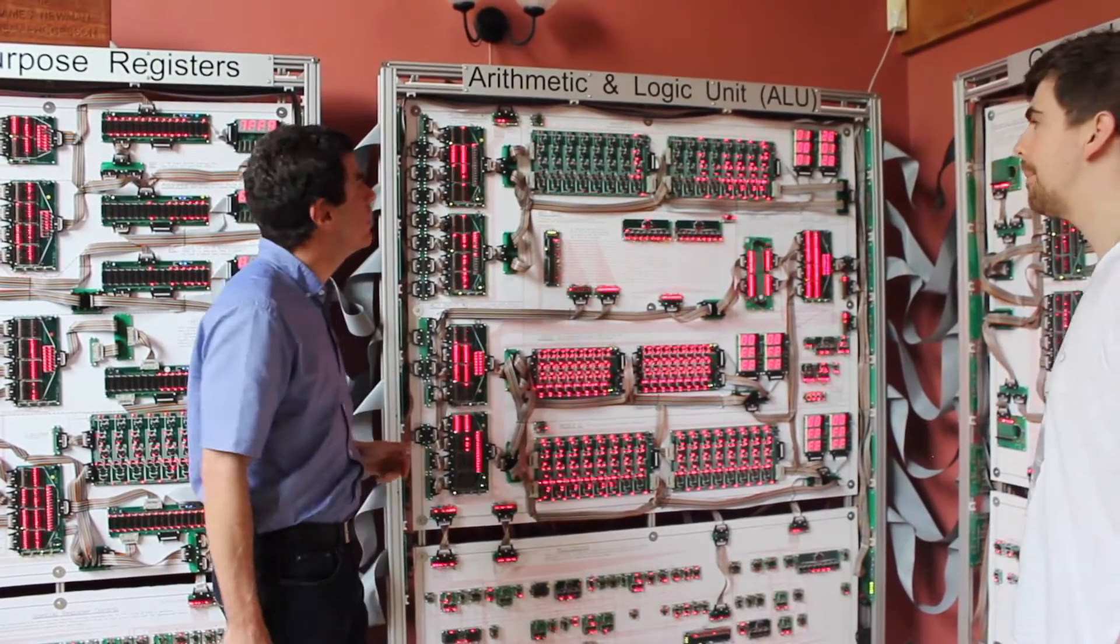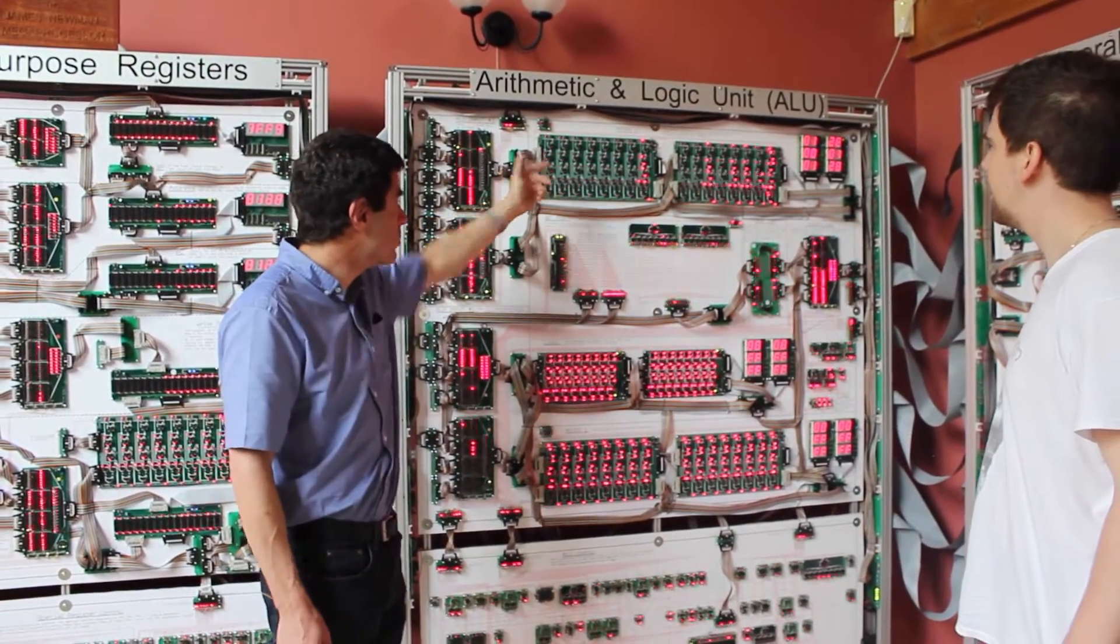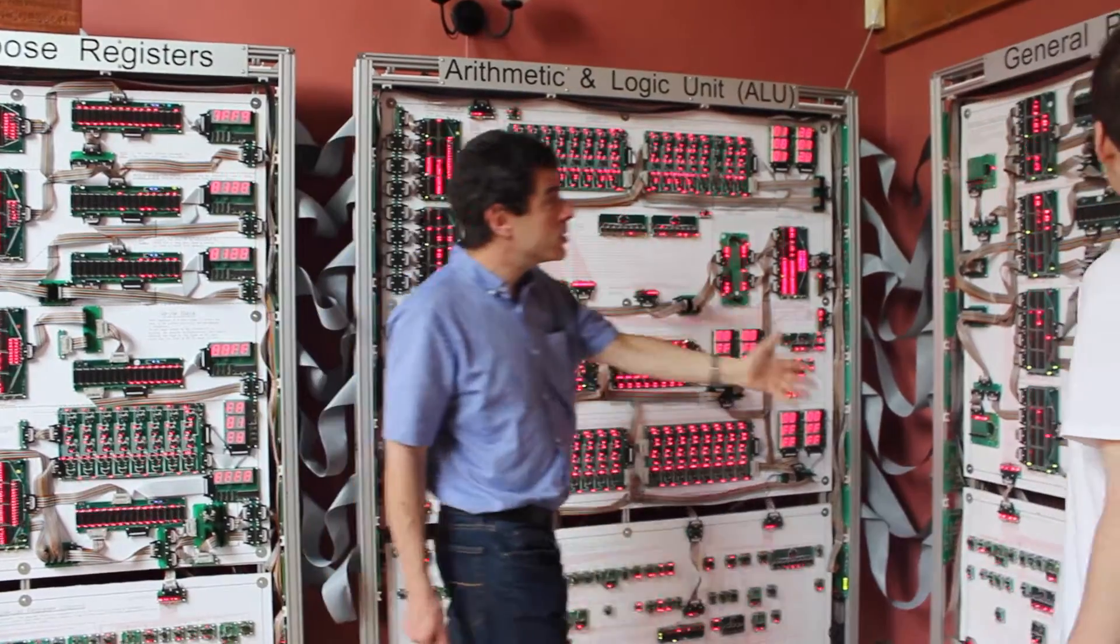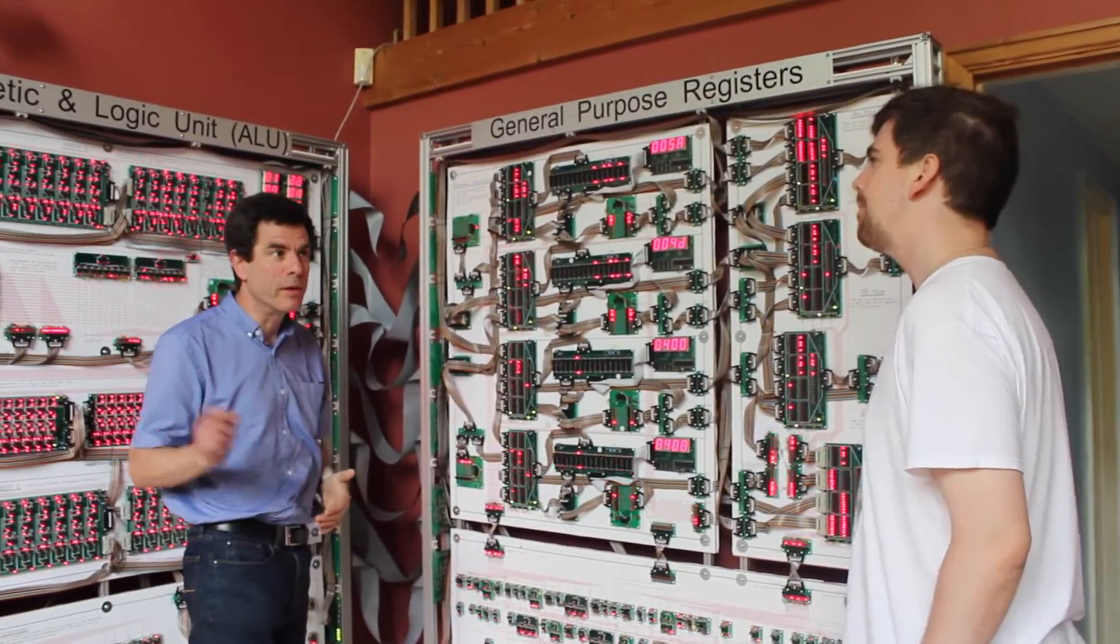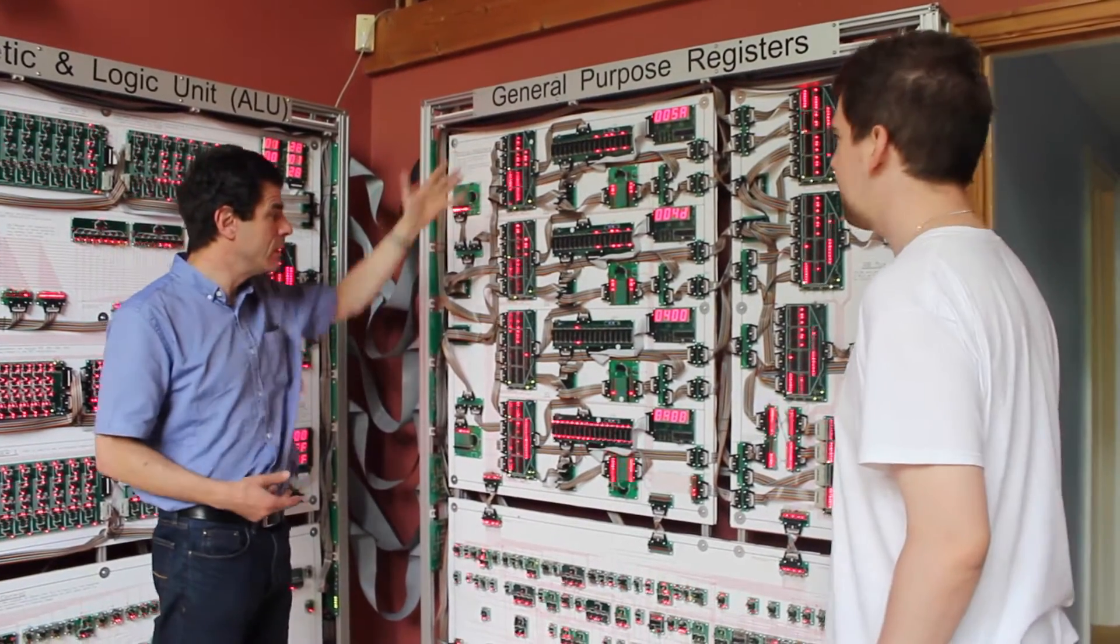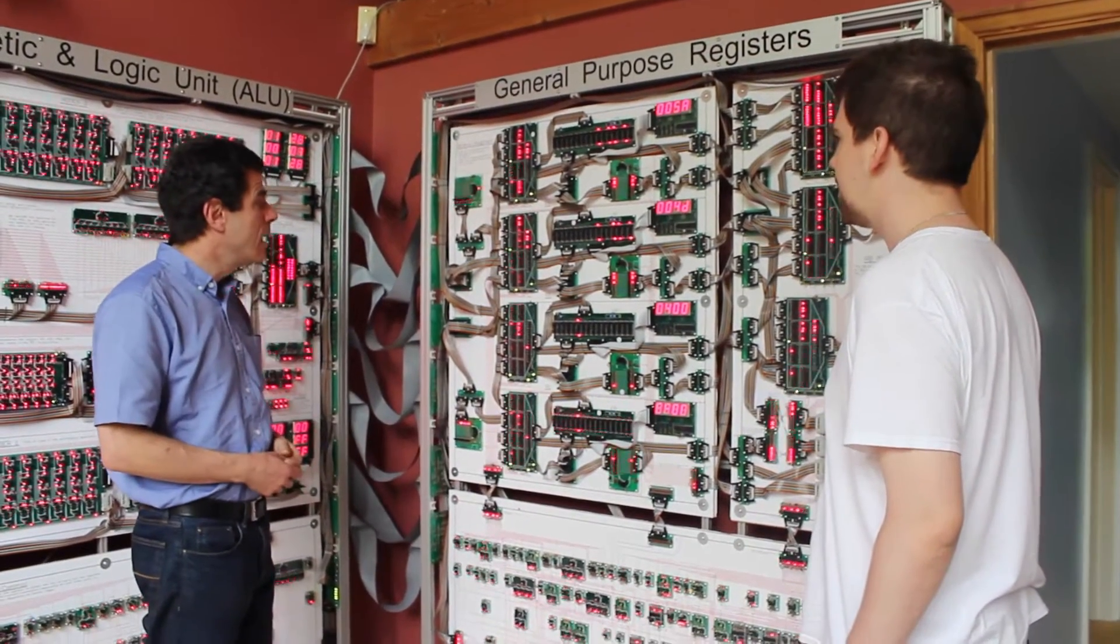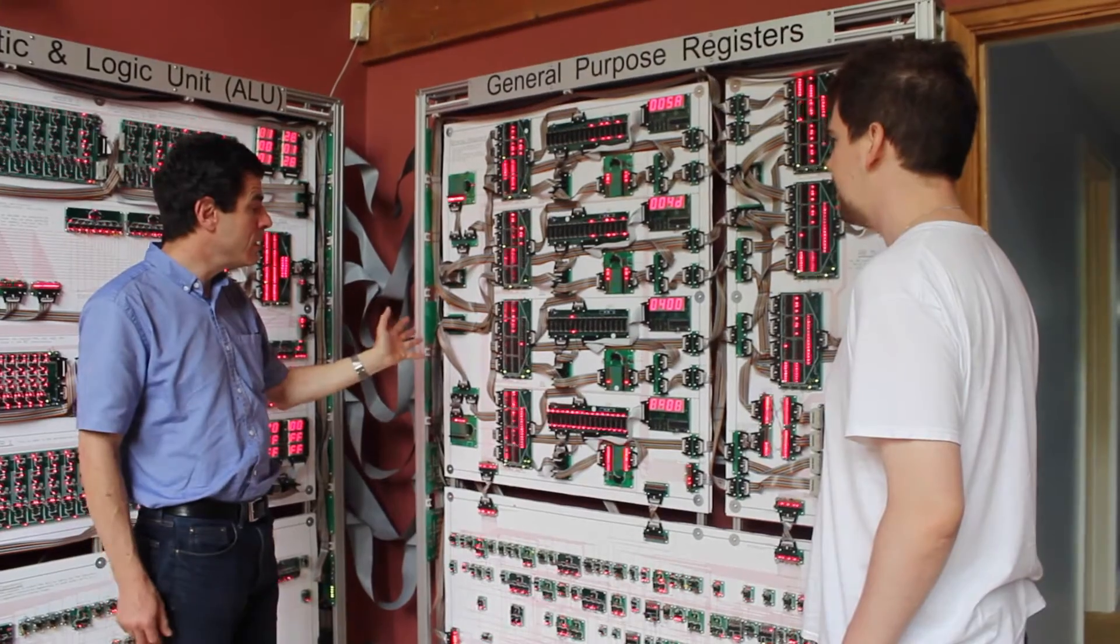We also need an adder for the program counter so it can move through the program, to increment and so forth. The last one is the general purpose registers - these are the registers that the program is normally aware of. There are four of them.